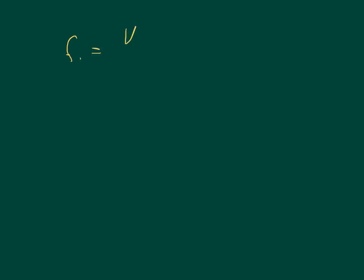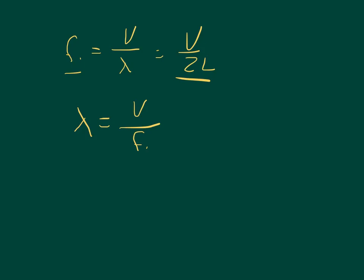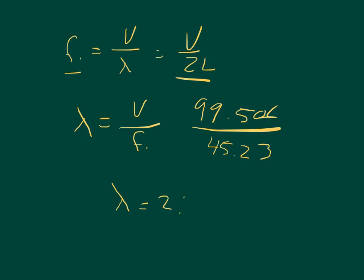Part D asks for the wavelength of the string's vibration. Using the same equation from Part B — frequency equals velocity over wavelength, which equals V over 2L — we solve for wavelength as velocity divided by fundamental frequency. From Part B, velocity is 99.506 meters per second, and the fundamental frequency is 45.23 Hz, giving a wavelength of 2.2 meters.